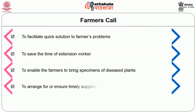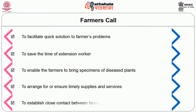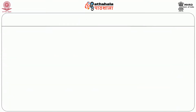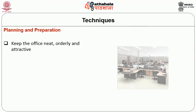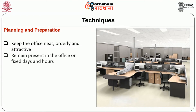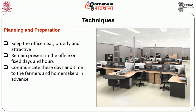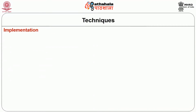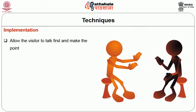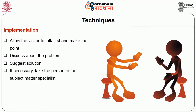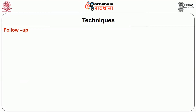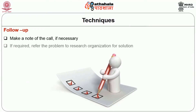Further objectives of farmers call include: to arrange for or ensure timely supplies and services; and to establish close contact between farmers and extension workers. For planning and preparation, keep the farm office neat, orderly, and attractive, remain present in the office on fixed days and hours, and communicate these days and times to farmers in advance. During implementation, allow the visitor to talk first, discuss the problem, suggest solutions, and if necessary take the person to a subject matter specialist. For follow-up, make a note of the call and if required refer the problem to a research organization for solution.